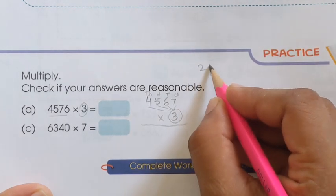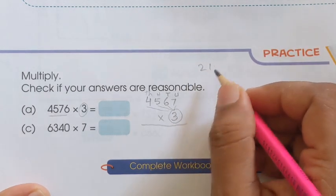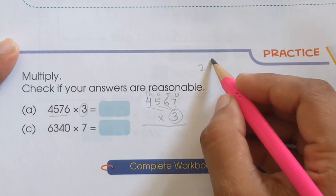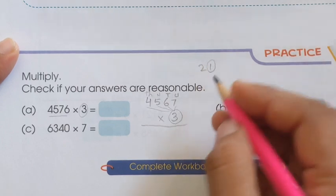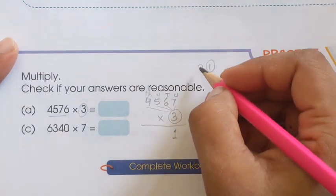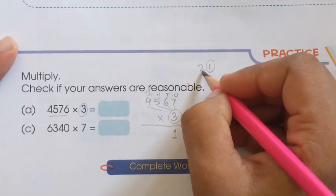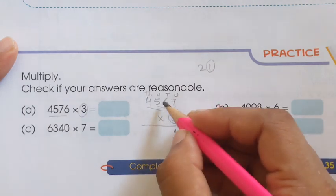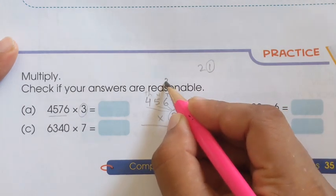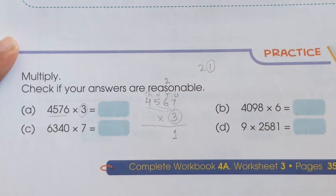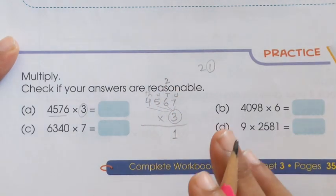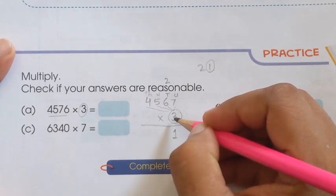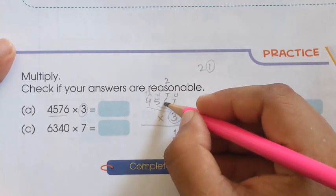The answer is twenty-one. In the unit digit, you write the 1 and carry forward the 2 to the next digit.